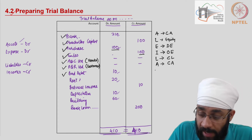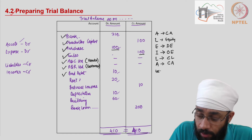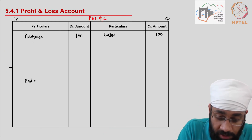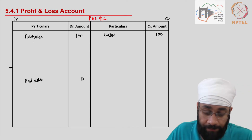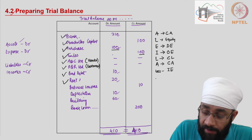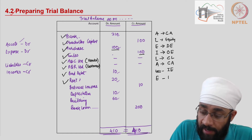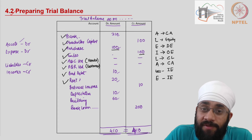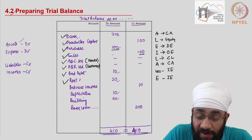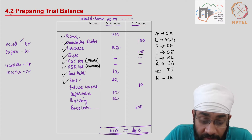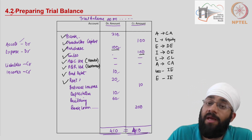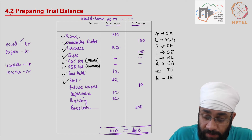Bad debts is a loss, so it is shown under indirect expenses - bad debts of 10 is written there. Next is rent, which is an expense and an indirect expense. One might argue whether the rent is for factory space or other purposes, but for a regular trading business, if you don't have clarity you put rent in indirect expenses. In practice you would know where the money is spent. Rent is 20.